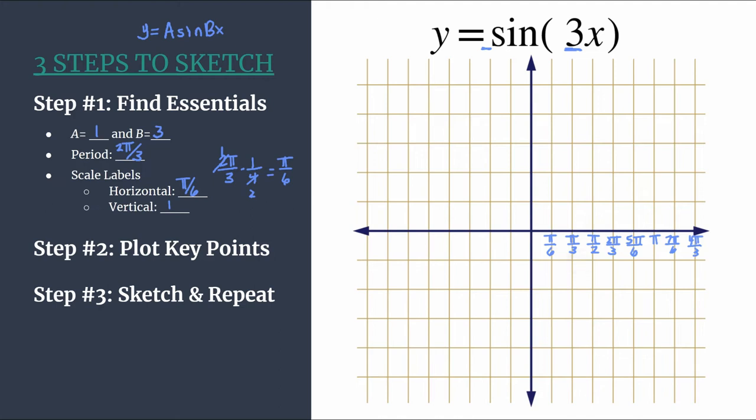Take a moment and label the other side of your horizontal axis to match. It'll just be with negative values. Now we can label our vertical axis counting by ones. I'm just going to go up to three, though we don't even really need to go that high, knowing that our amplitude is one.